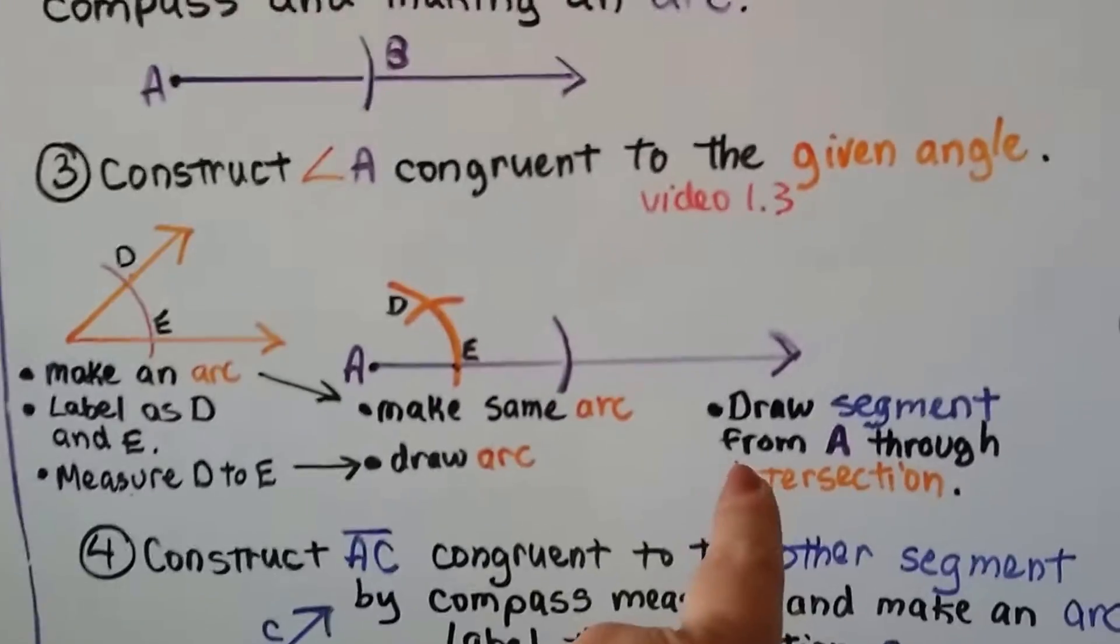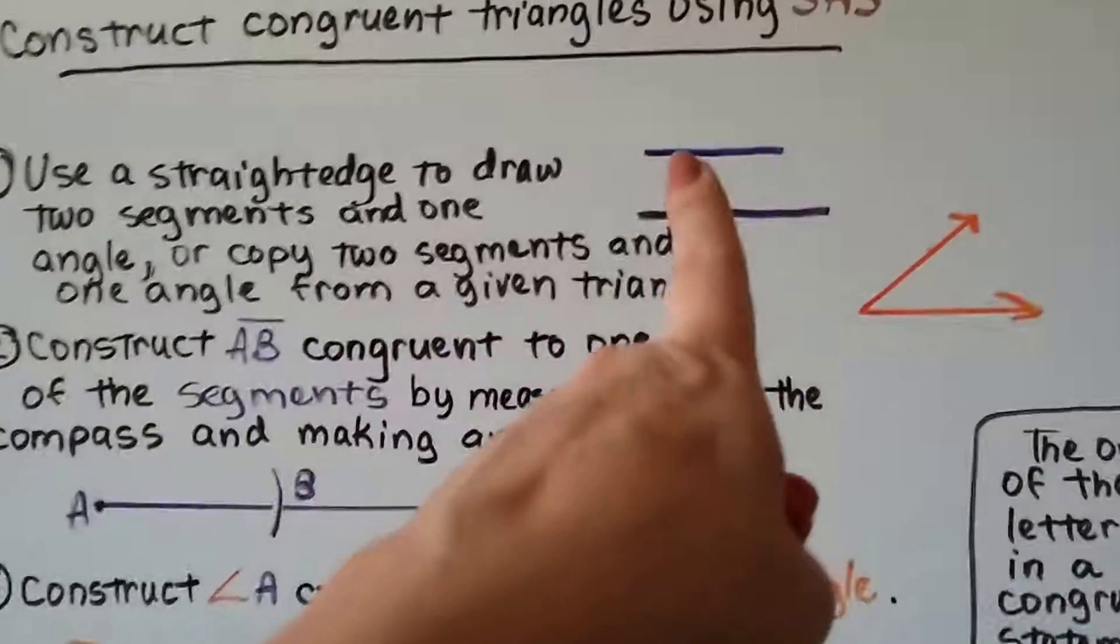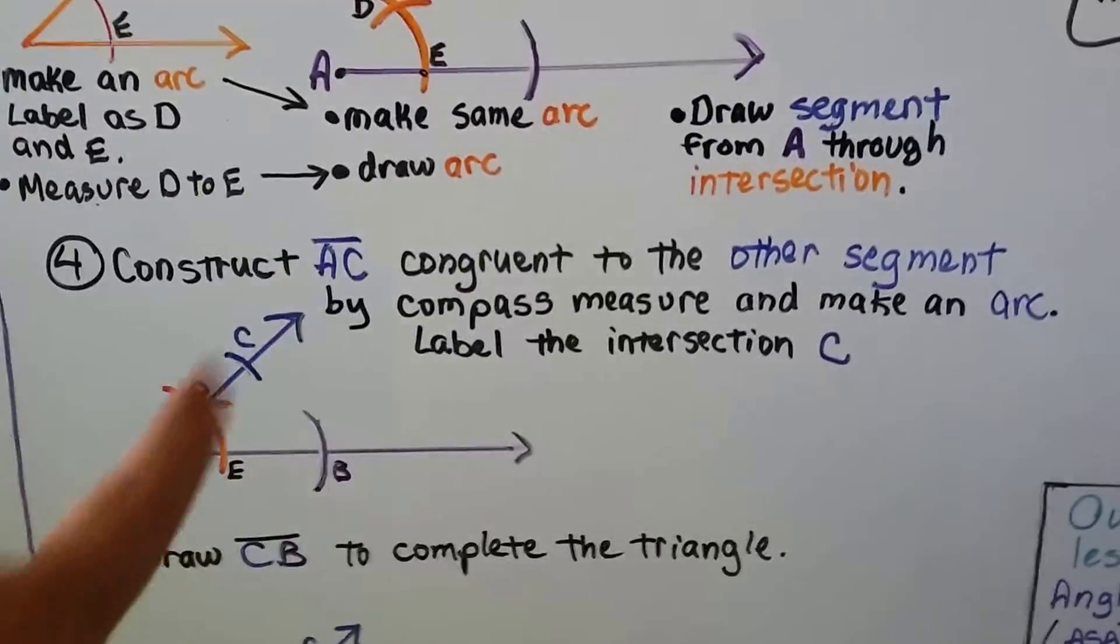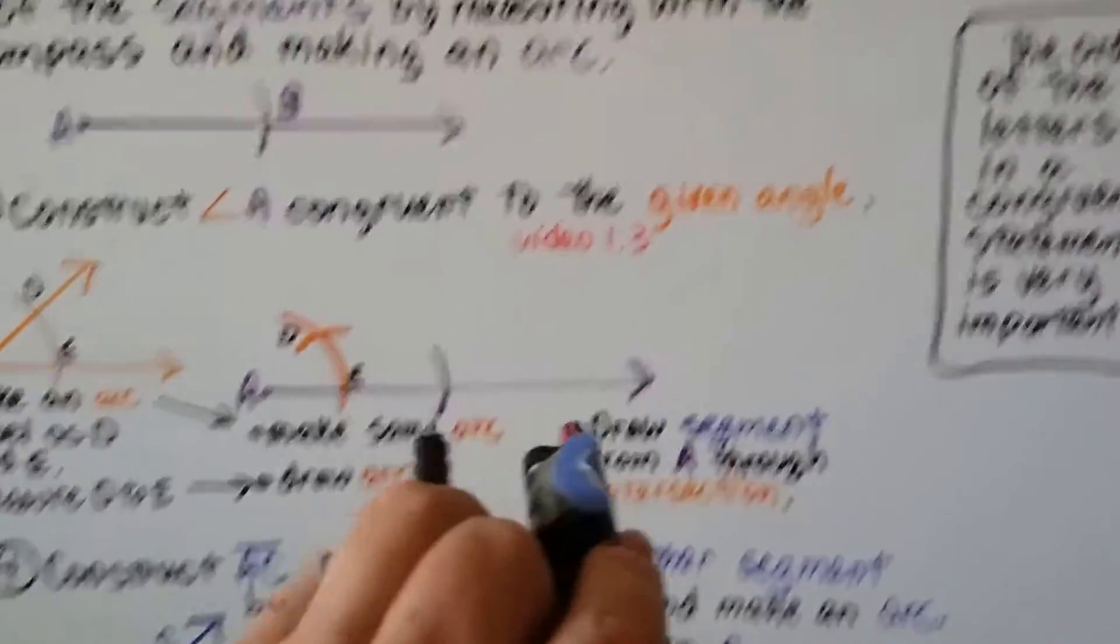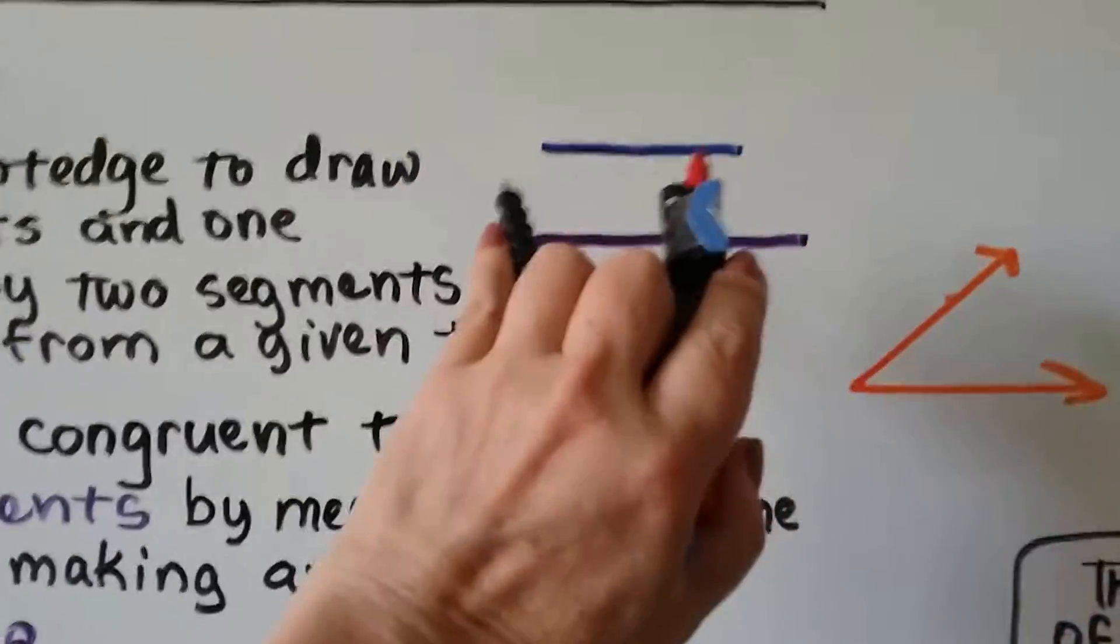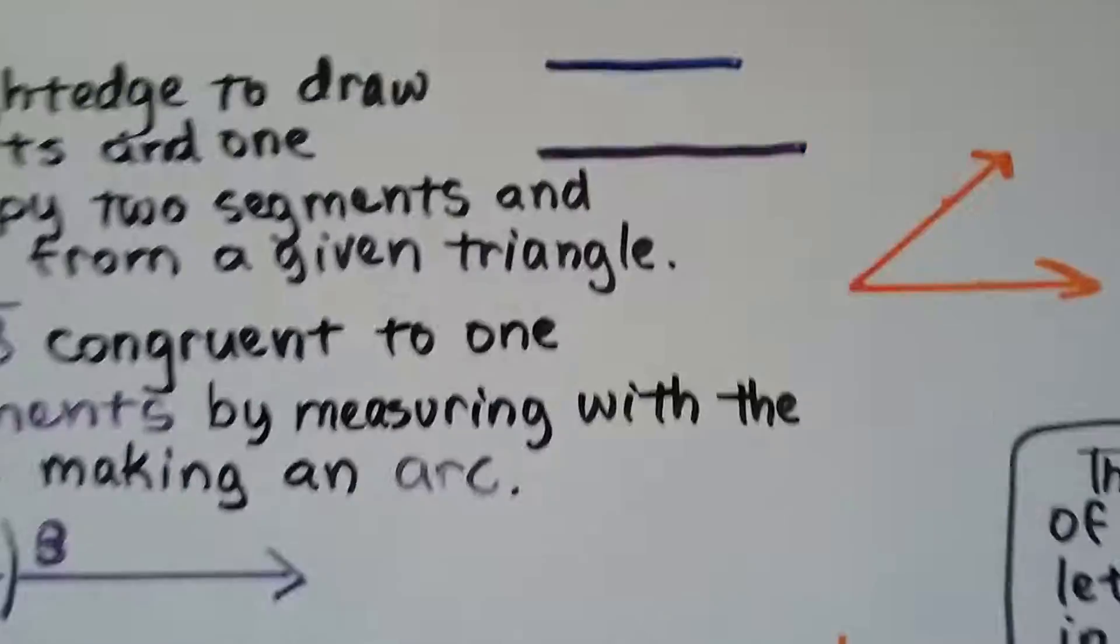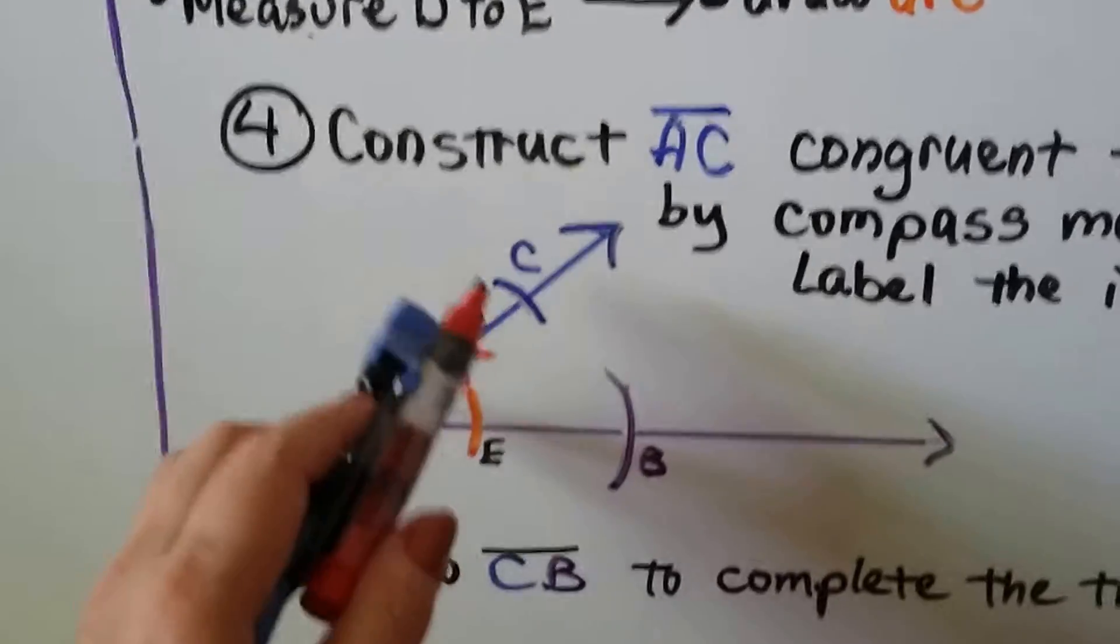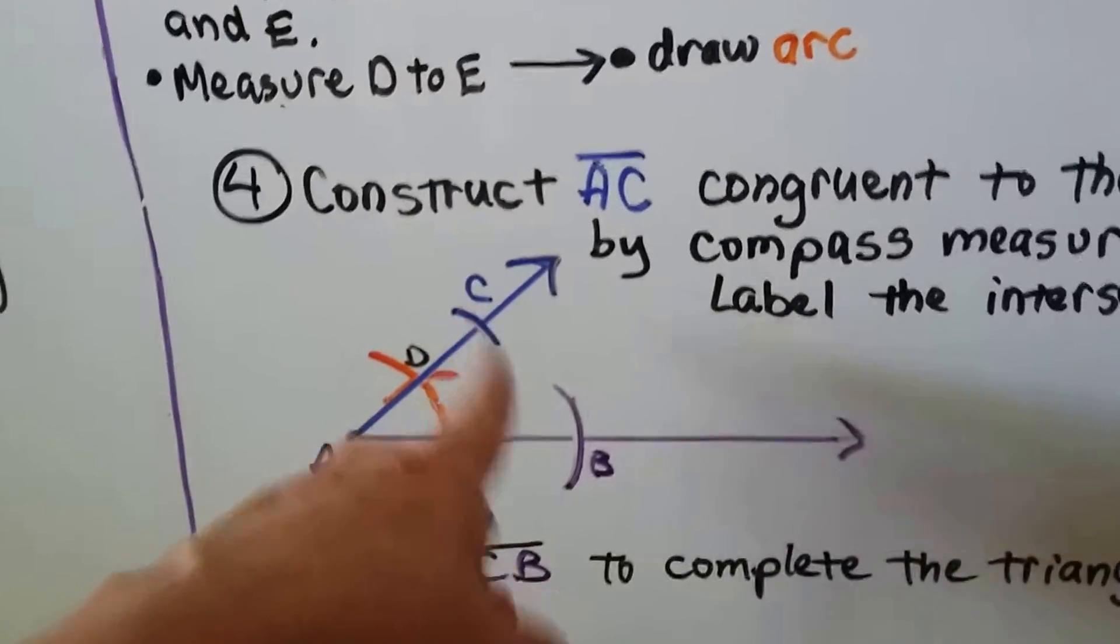Now I can draw a segment from A through that intersection so we can make this blue one up here. We can construct AC. What we do is take our compass, measure the blue one, the other segment, and where this is set we put this at A and we put a mark, an arc, and mark that as C.